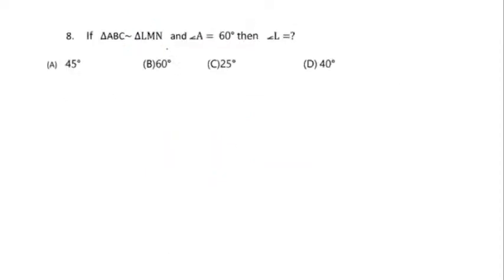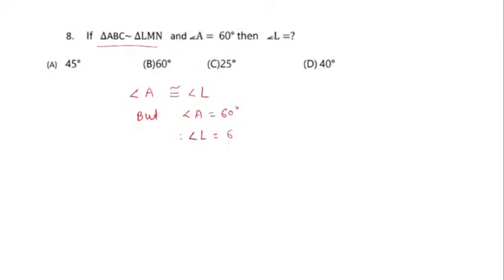Next question: if triangle ABC is similar to triangle LMN and angle A equals 60°, what is the measure of angle L? Options: 45°, 60°, 25°, or 40°. Since the triangles are similar, corresponding angles are congruent. The corresponding angle of A is L, so angle L is also 60°. Option B is the correct alternative.